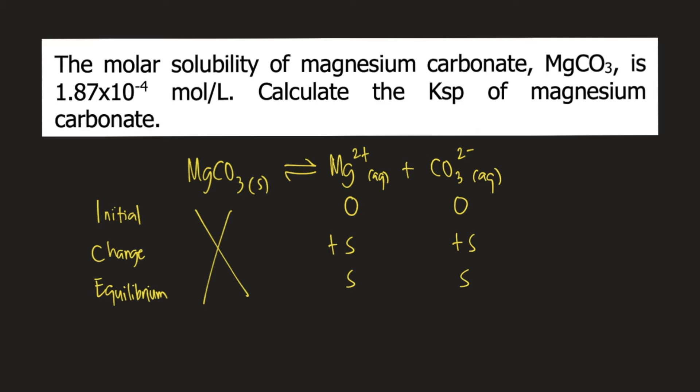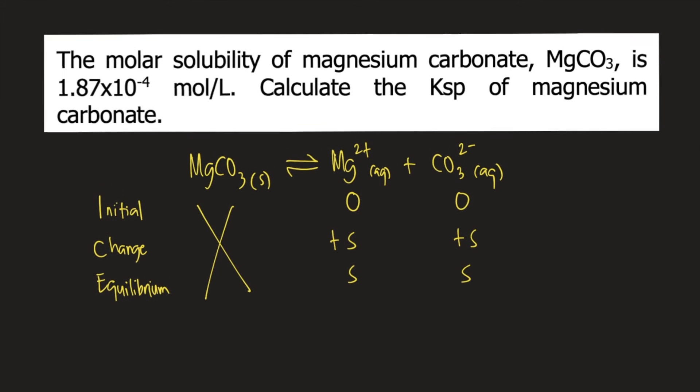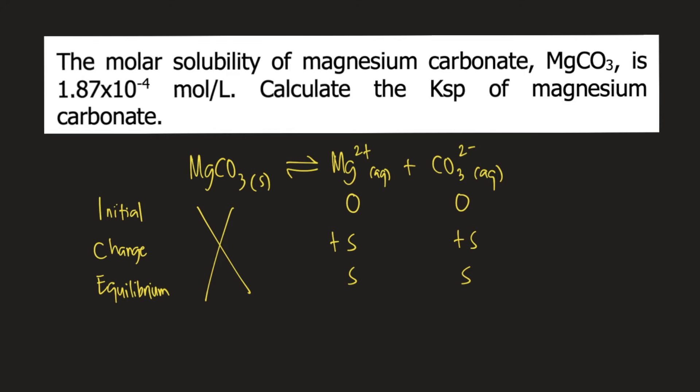Now that you're done writing the ICE table, write the Ksp expression for the salt. Remember that Ksp is equal to the concentration of products raised to coefficient divided by the concentration of reactants raised to coefficient. Again, take note that we are only including aqueous and gaseous species. We do not include solids and liquids.